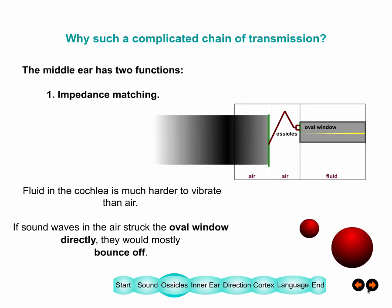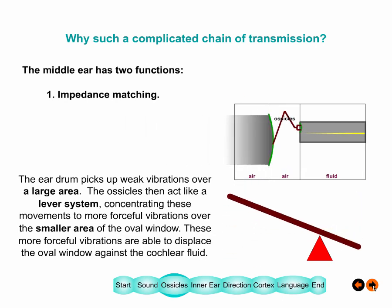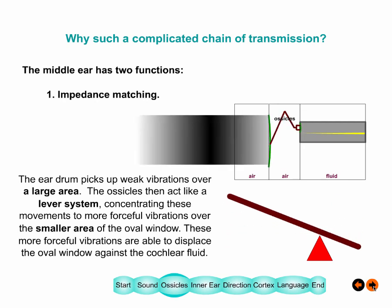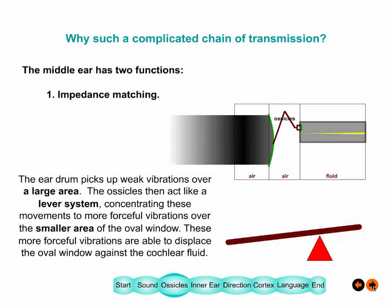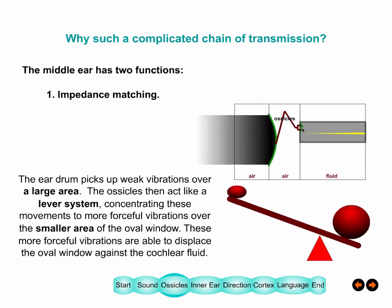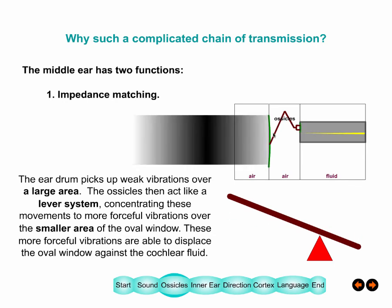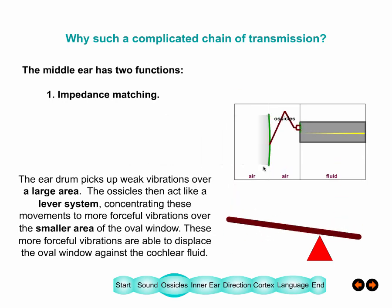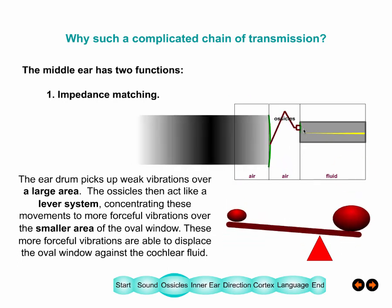The ossicles act like a lever system — similar to the jack you use to lift a car with a flat tire. This lever works in several ways: the shape of the ossicles forms a lever, and importantly, the eardrum is large while the oval window membrane is much smaller. This concentrates all the force onto that tiny little area.